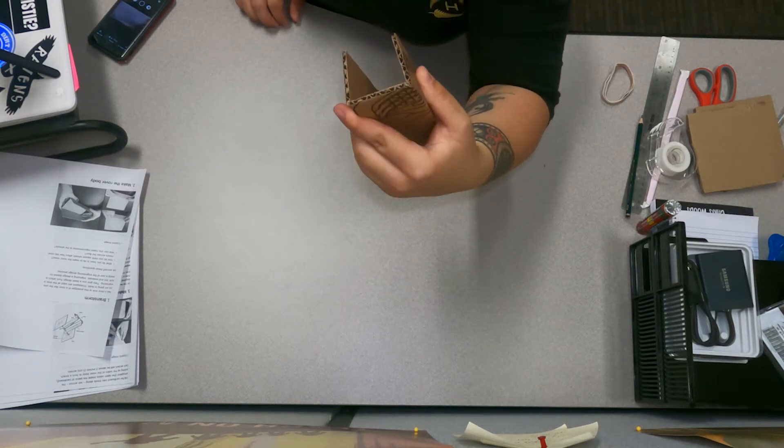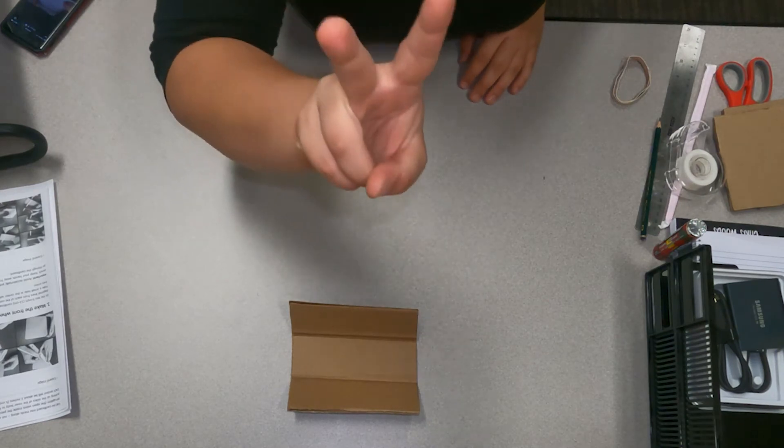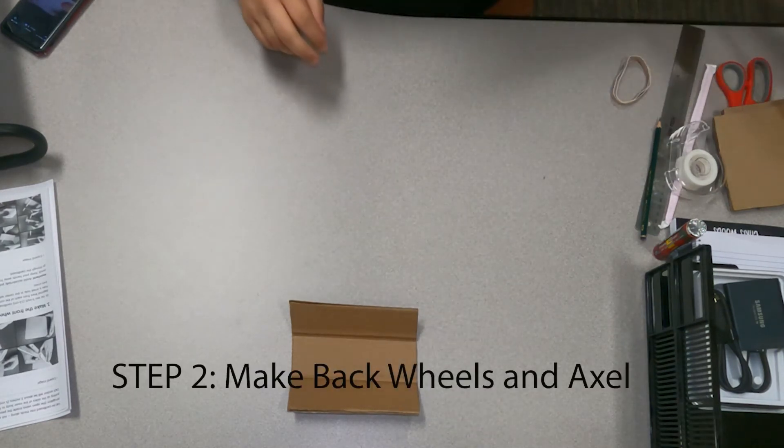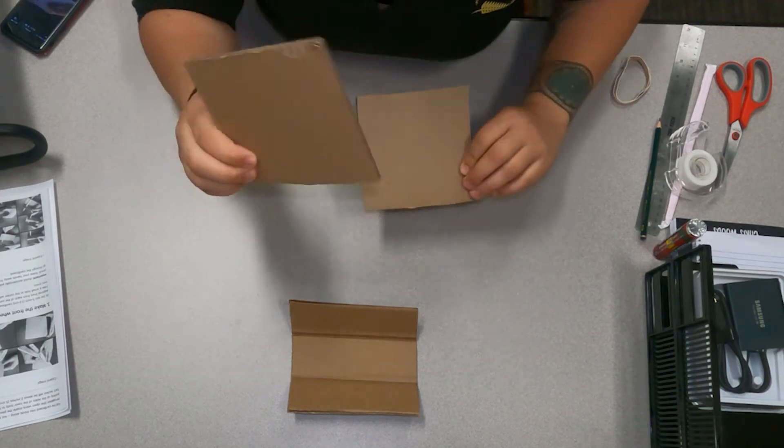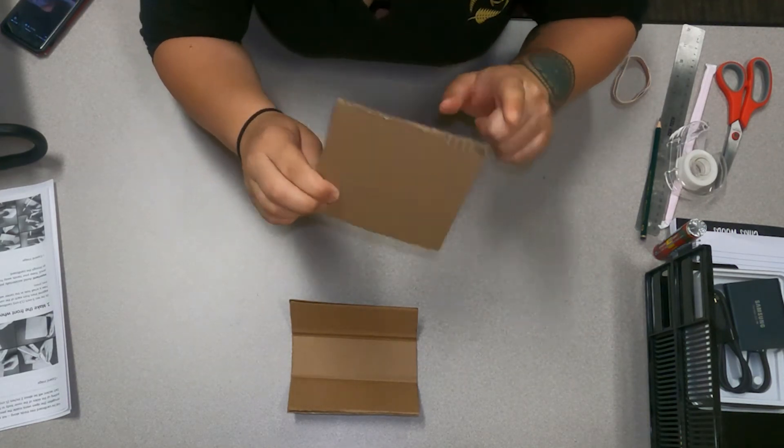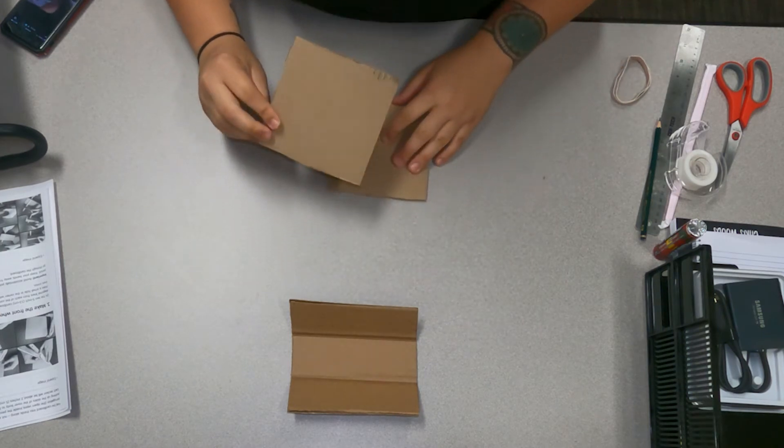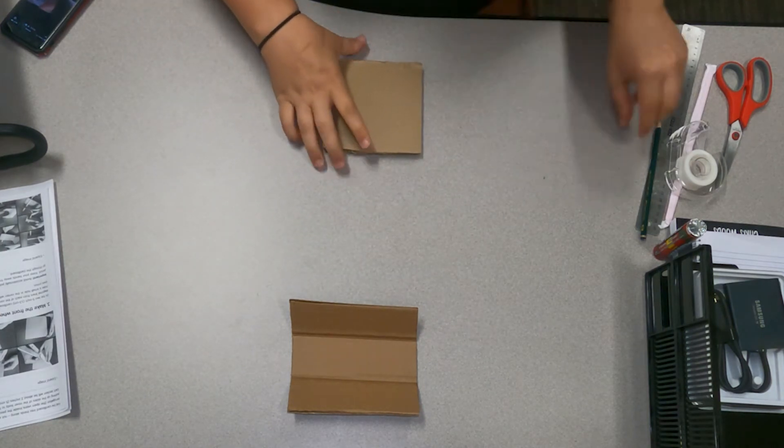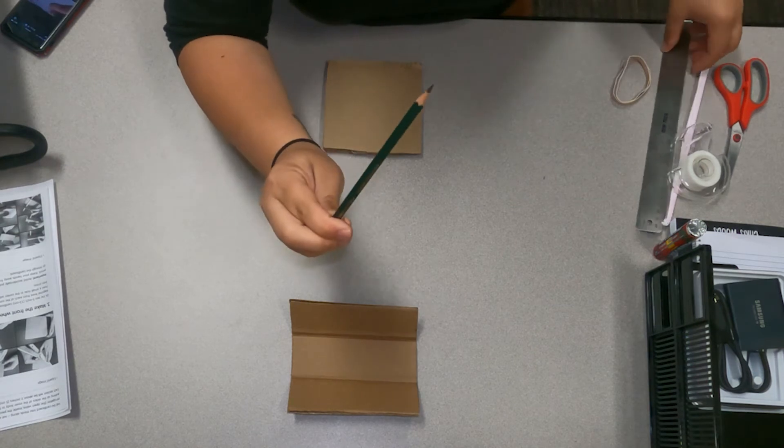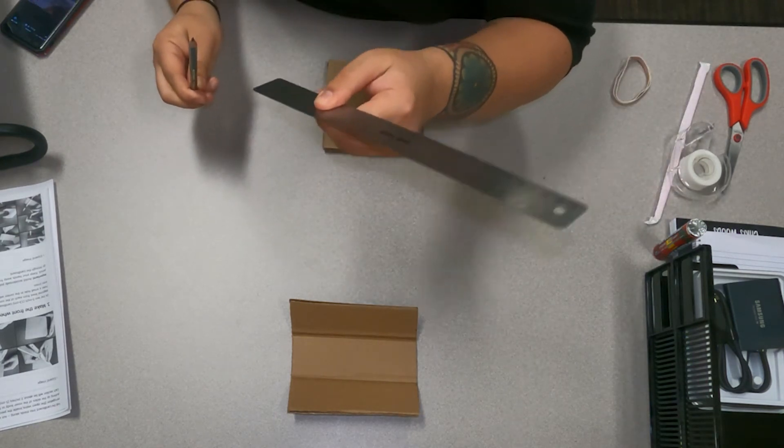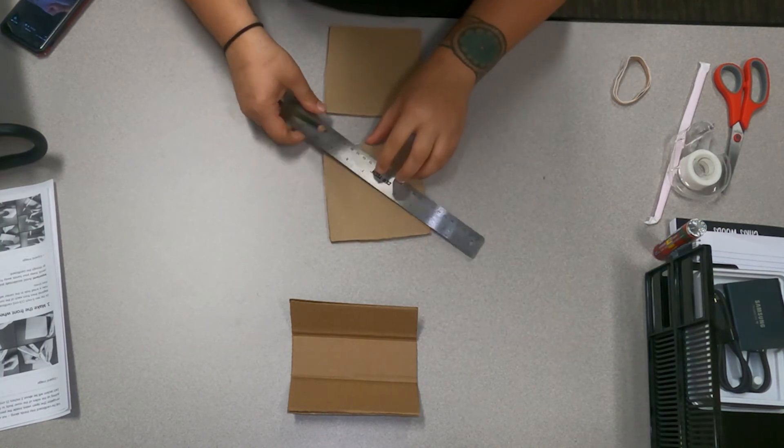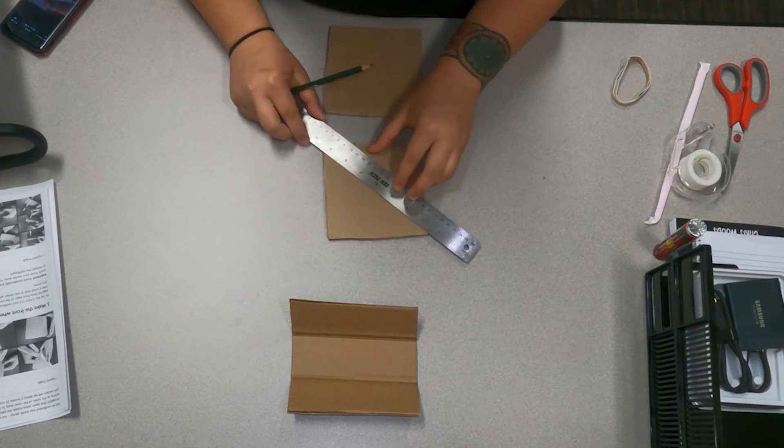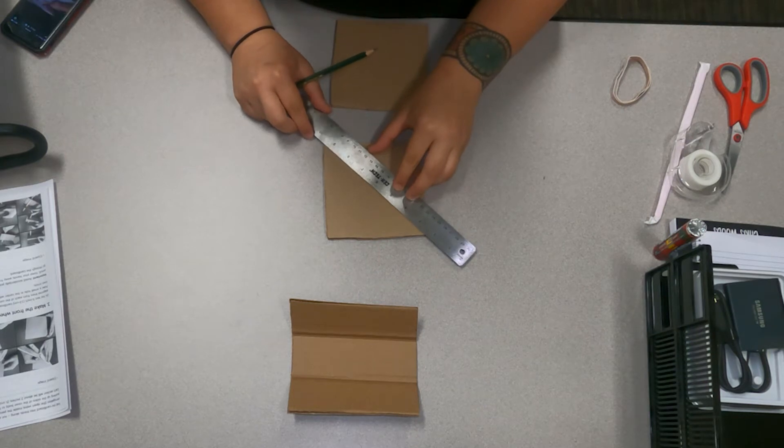Step two, we're going to put the back wheels and the axle together. You're going to take your two five by five pieces of cardboard and you're going to need your pencil and your ruler for this. You're going to lay your ruler from one corner to the other diagonally across. You want it pretty exact.